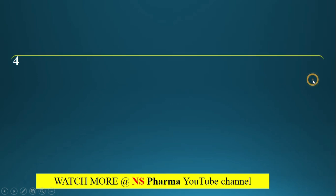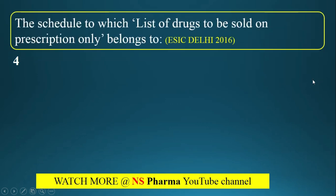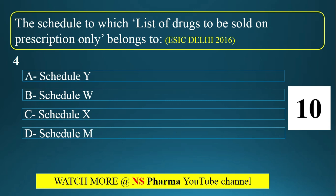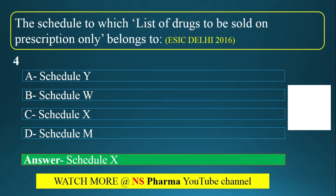Question number 4: The schedule to which the list of drugs to be sold on prescription only belongs is? Options are Schedule Y, Schedule W, Schedule X, Schedule M. The correct answer is Option C — Schedule X. Schedule X drugs should be sold on prescription only.